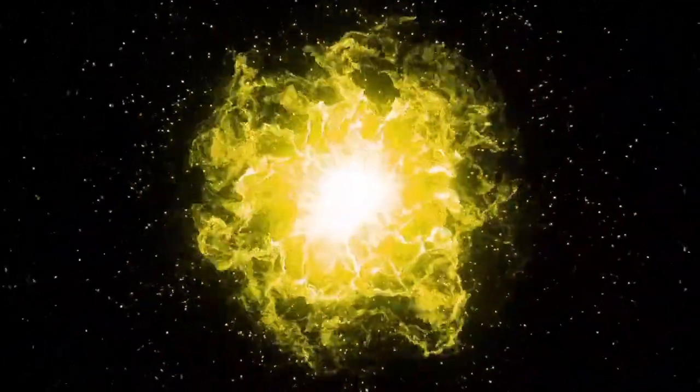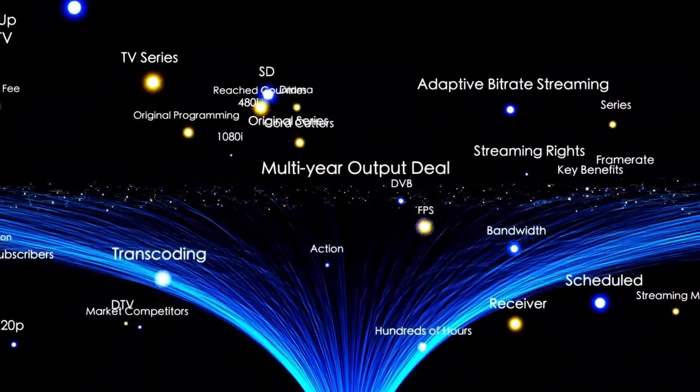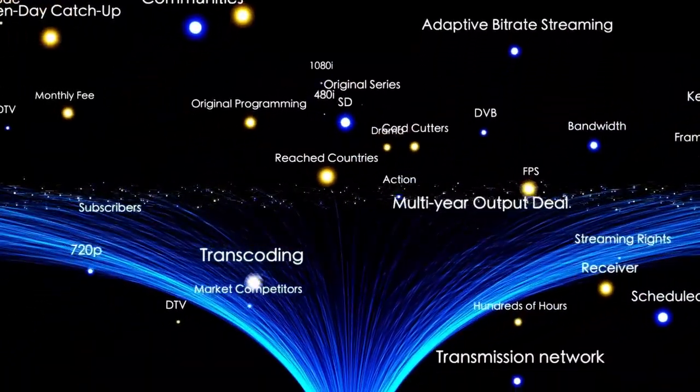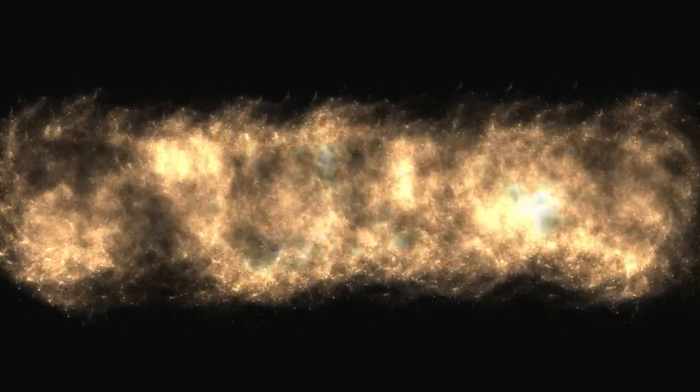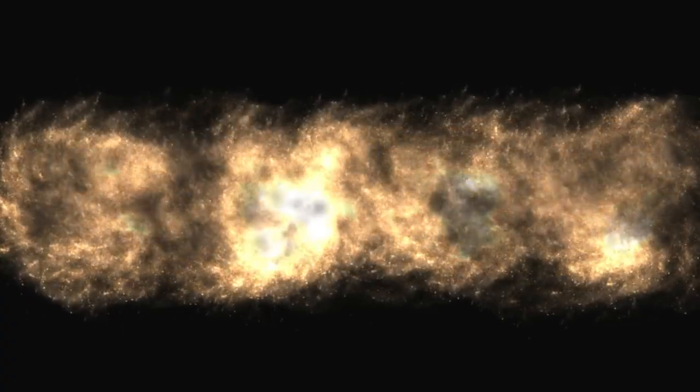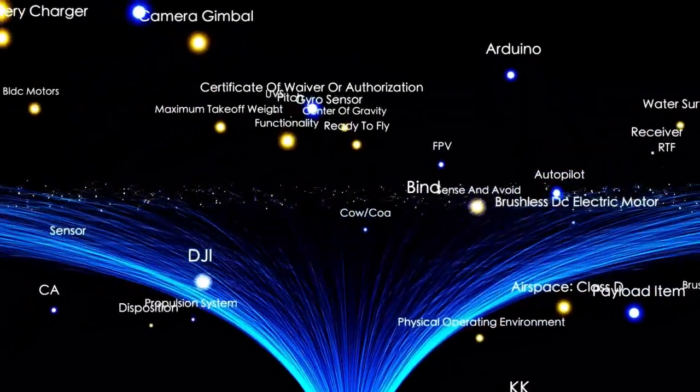This group is part of a much larger collection known as the Virgo Cluster, which contains over 1,500 galaxies. Virgo in turn belongs to an even grander structure, the Laniakea Supercluster. This supercluster is home to approximately 100,000 galaxies, each brimming with hundreds of billions of stars and planets. And yet, even this is only a small part of the big picture.